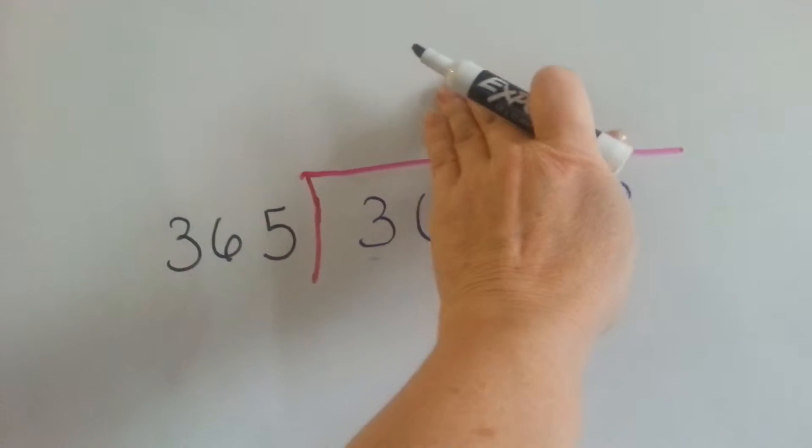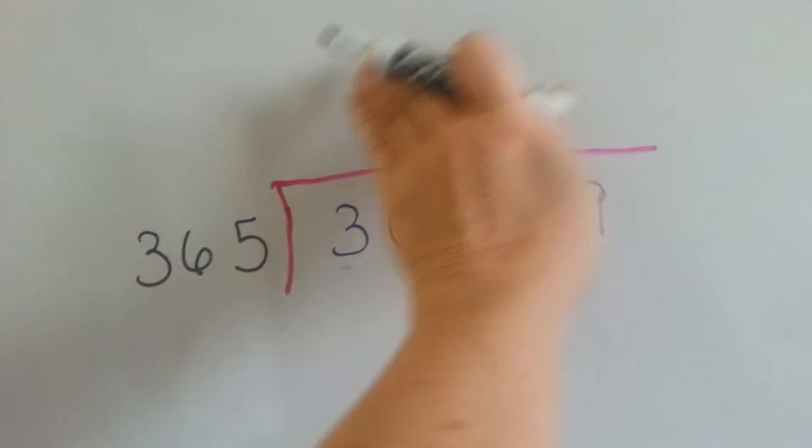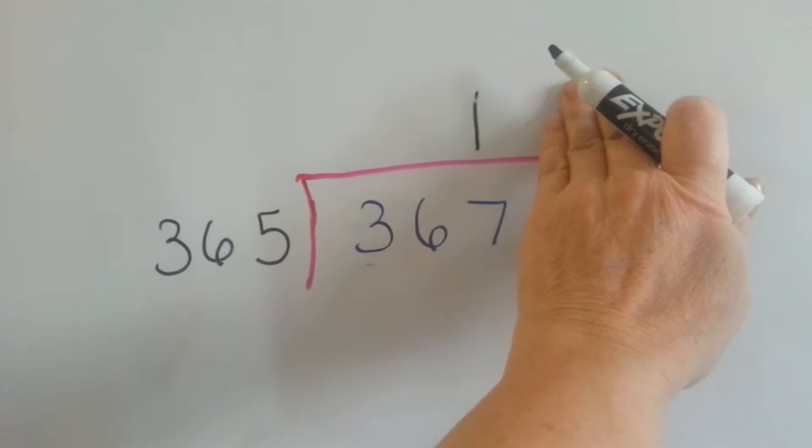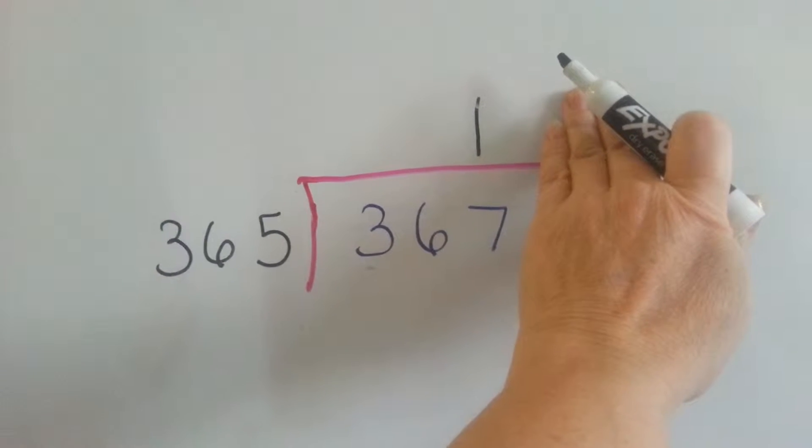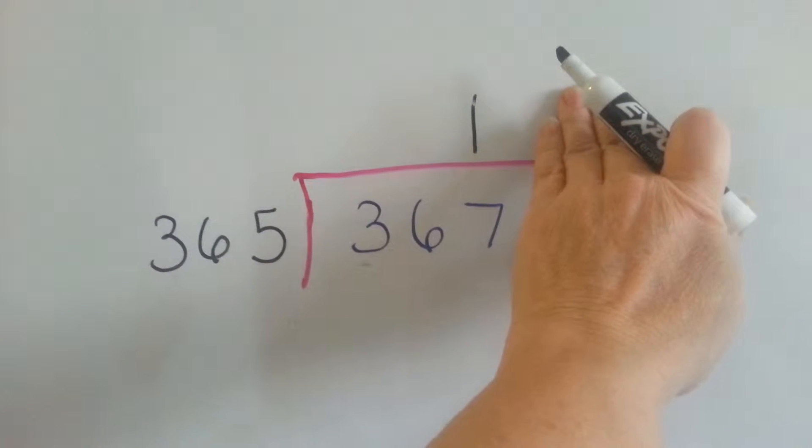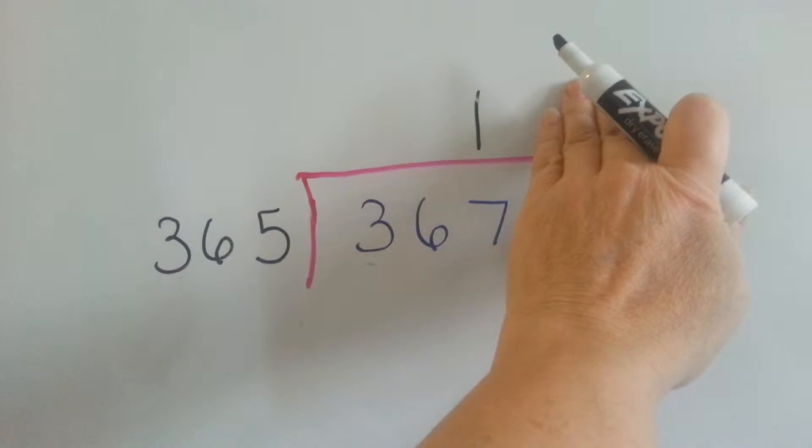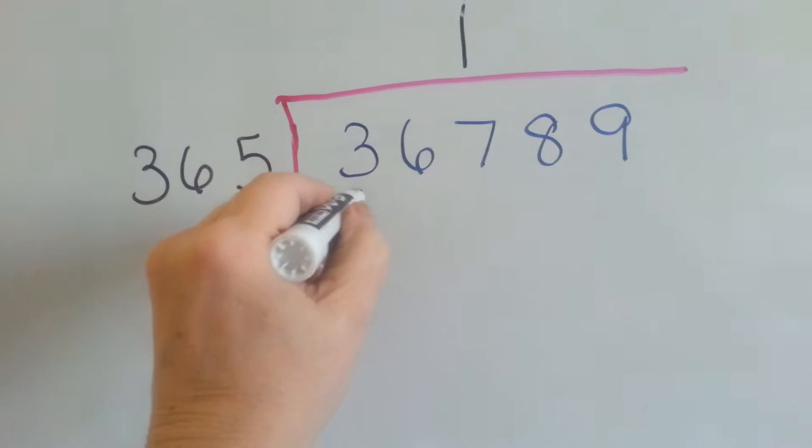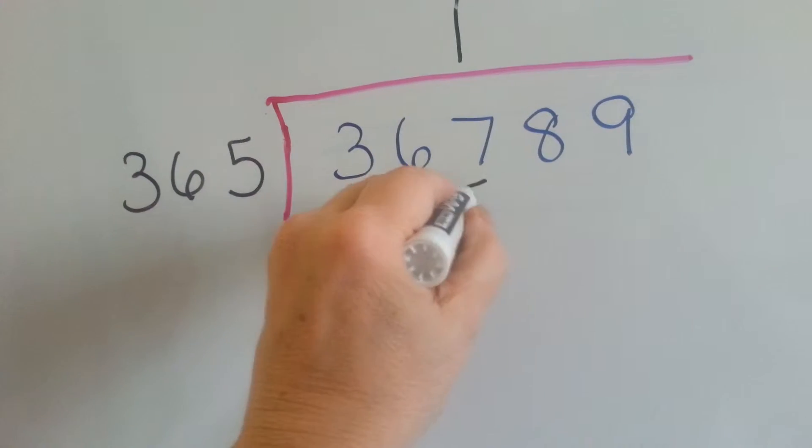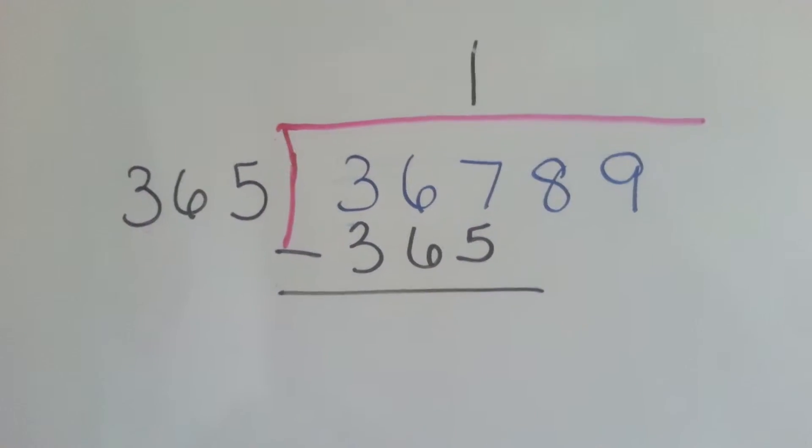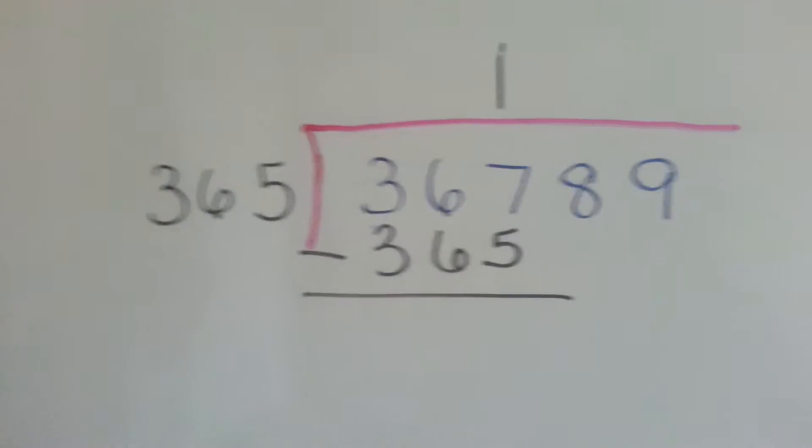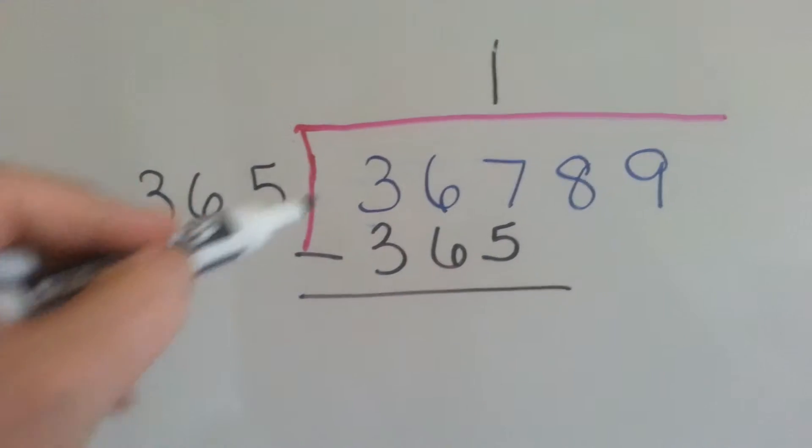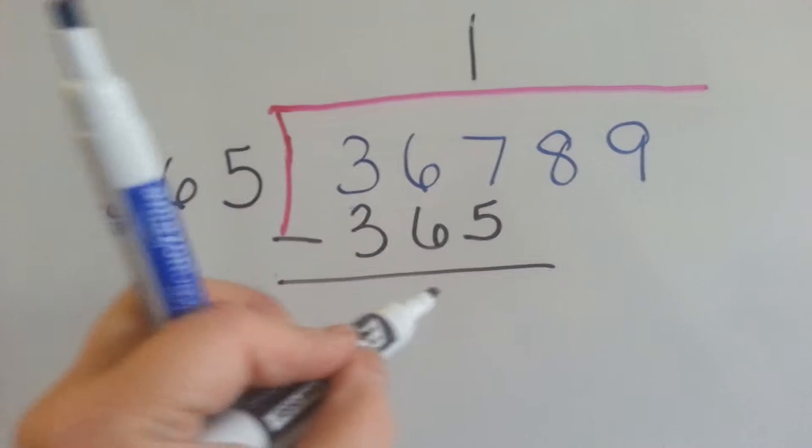See? It didn't fit into here. It didn't fit into here. It fit into here. So that's where the 1 is going to go. We do our multiplication, 365 times 1, and we put it underneath the 367. We do our subtraction, and we can see that 7 take away 5 is 2.